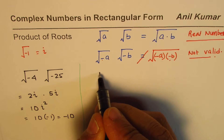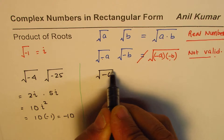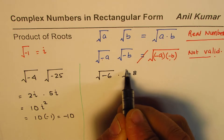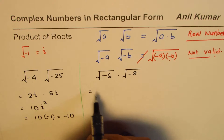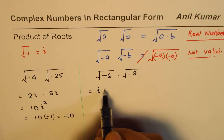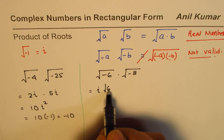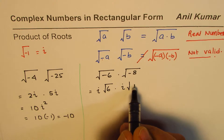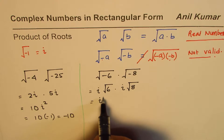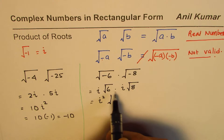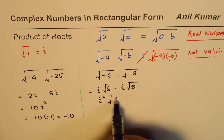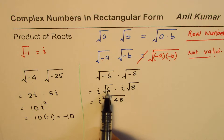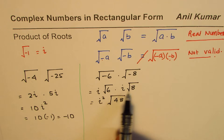Let's take one more example: square root of minus 6 times square root of minus 8. We can write this as i times square root of 6, times i times square root of 8 — since square root of minus 1 is i. Now we can write this as i² times square root of 6 times 8, which is square root of 48, since we no longer have a negative sign within the square root.